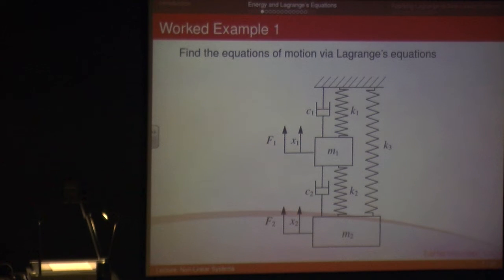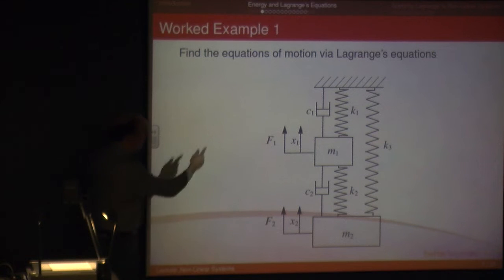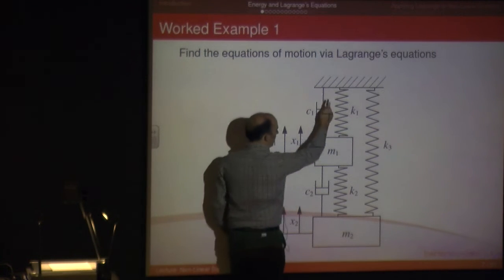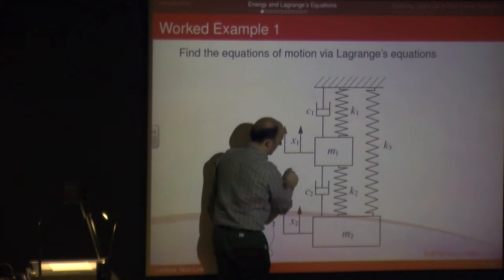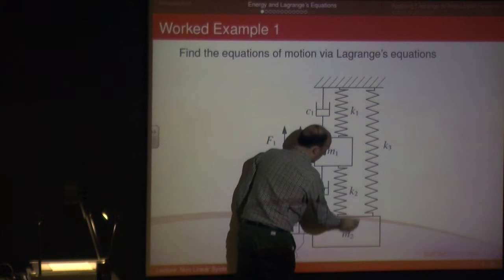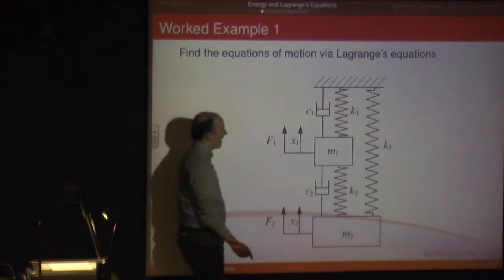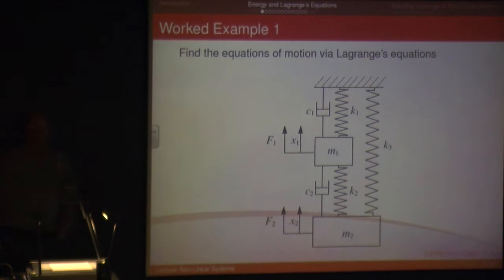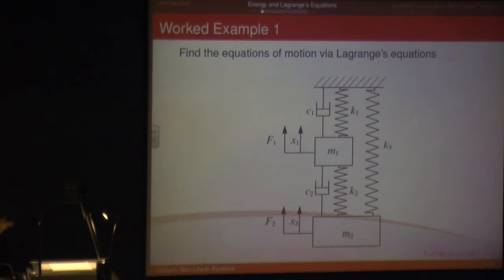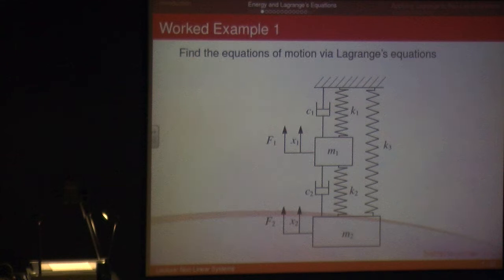Let's do a simple example. We've got a 2 degree of freedom system here — it's relatively complicated. We have dampers, springs connecting the mass to ground and to another mass, and M2 also has a spring connecting it to ground. It's a little more complicated than the systems we've seen before, but using the quick method from Chapter 5 we can determine the equation of motion relatively straightforwardly. But we're not going to use that quick method — I'm going to use Lagrange's equation to get the same result.